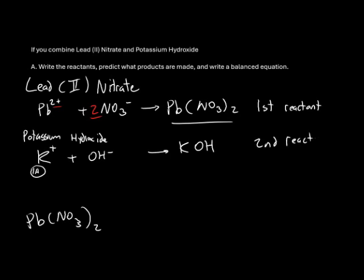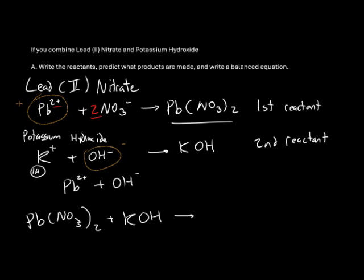This is our second reactant. We'll write this below as well. To find the first product, we'll take the lead from the first compound — that's positive — and the OH from the second — that's negative — and we'll try putting those together. When we try to place Pb2+ with OH minus, we can see the charges don't cancel out. We'll need two pieces of OH negative in order to get two negatives to cancel out the two positive charge from lead. This will give us PbOH2, and this is our first product.